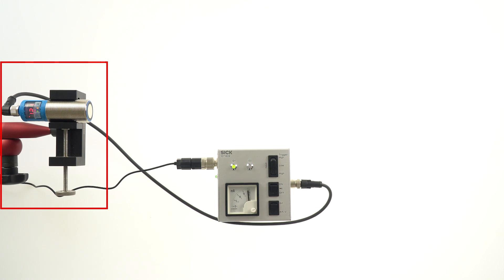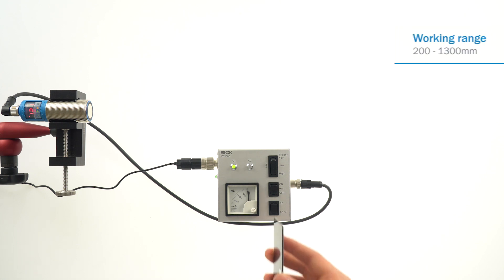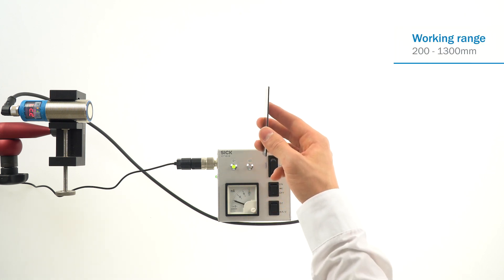A UM30-2 is horizontally clamped in a flexible arm. We have connected a sensor demonstration box between the power supply and the UM30-2. The setup is powered up. The measurement distance of the UM30-2 is within the working range of 200 to 1300 millimeters.